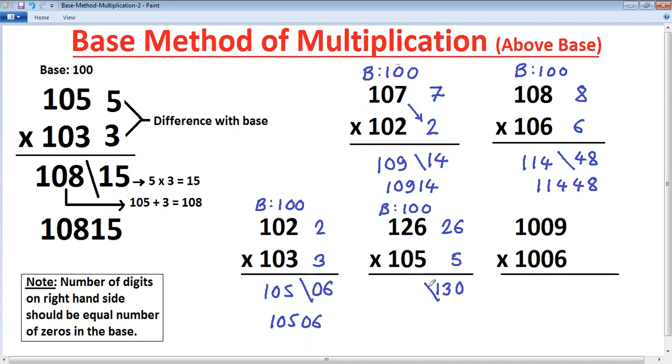126 plus 5 is 131. 26 plus 5 is 31. Again, with this rule, there should be only two digits on the right hand side. Here is 3. This is extra. Extra. We are adding to the left. Left hand side answer is 132. Final answer 13230.